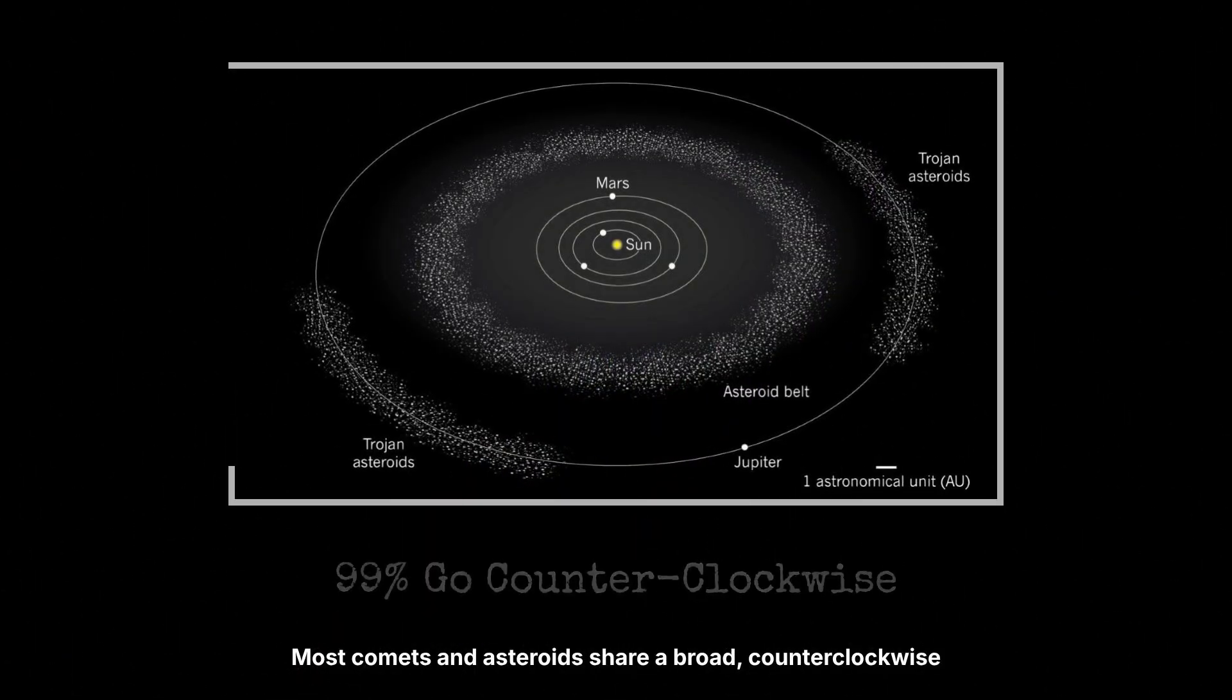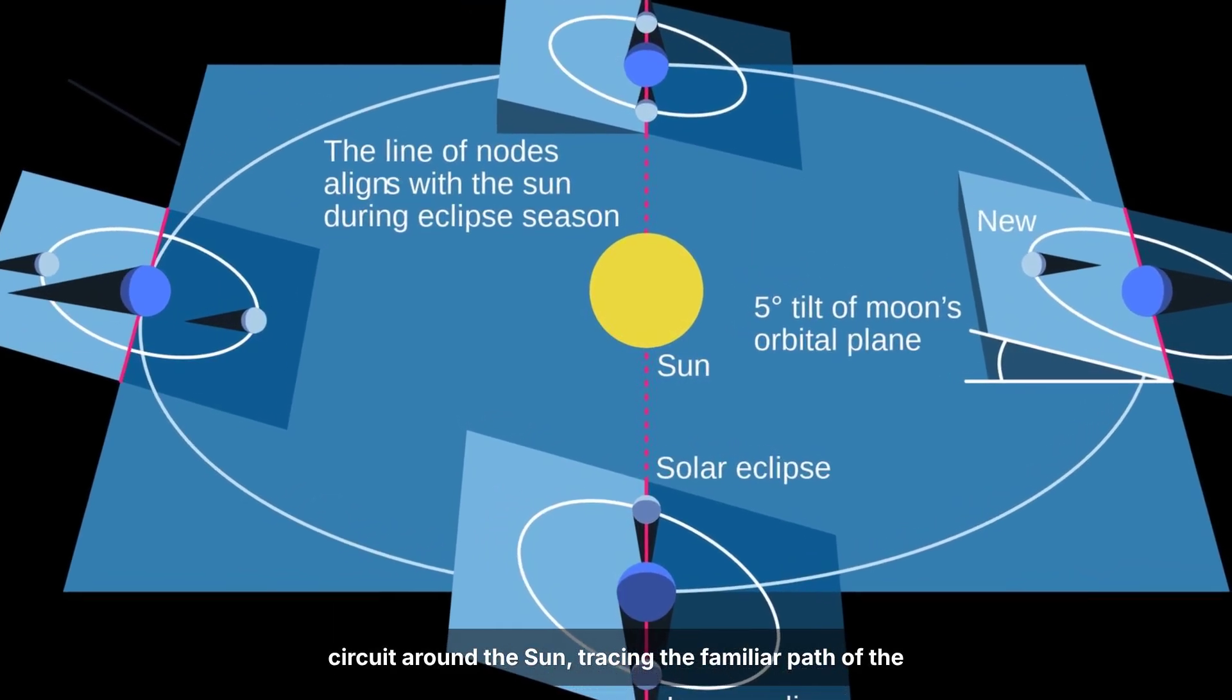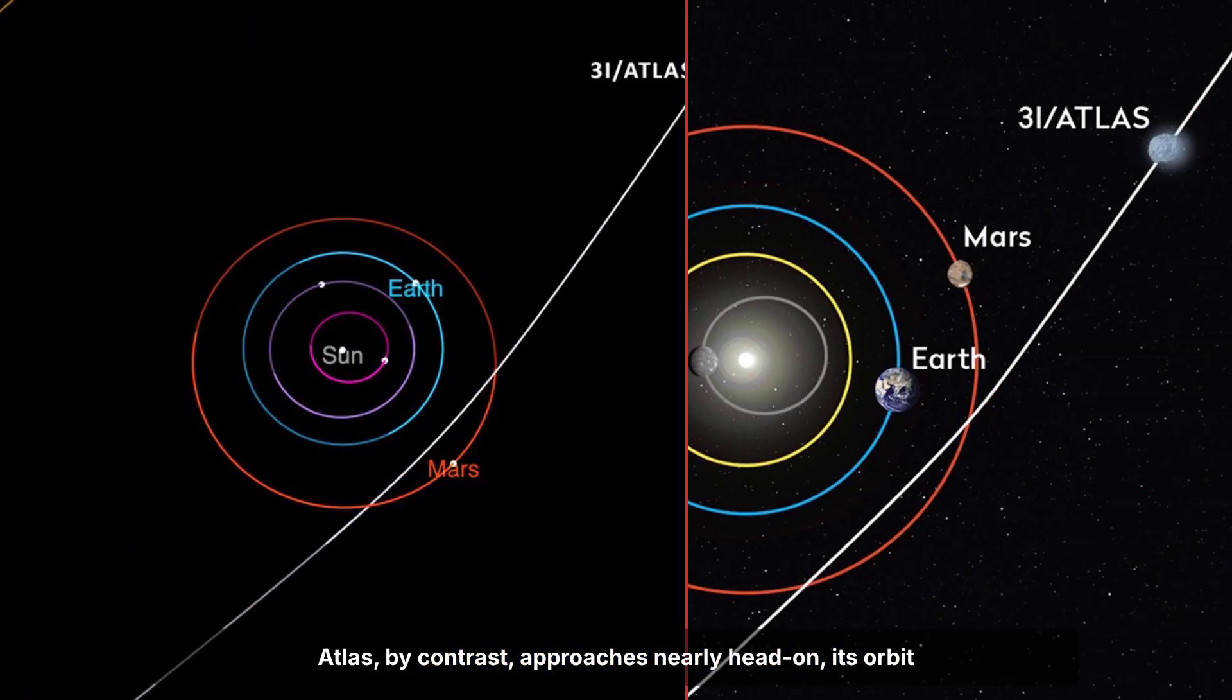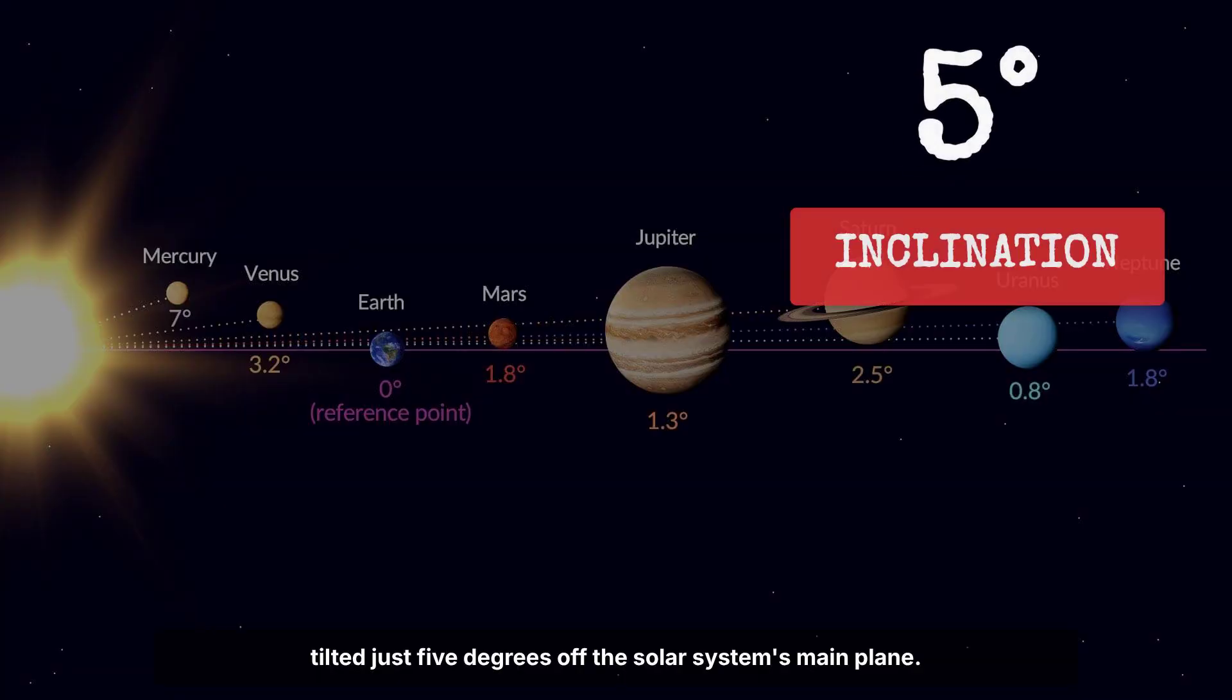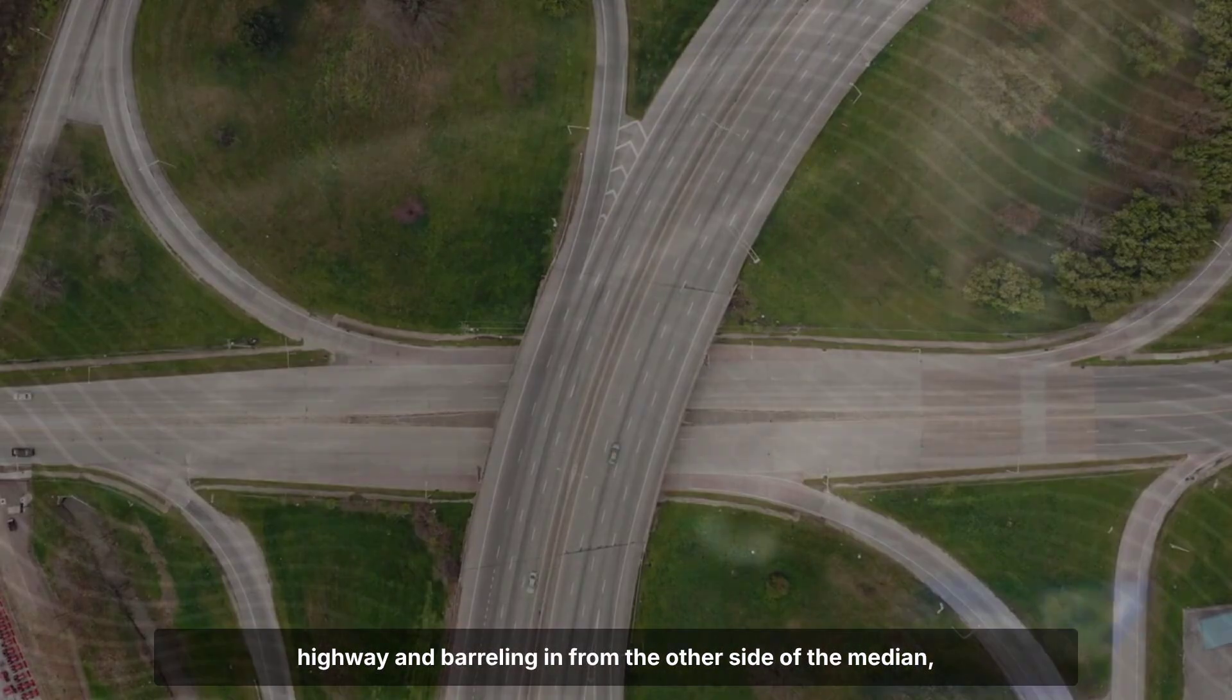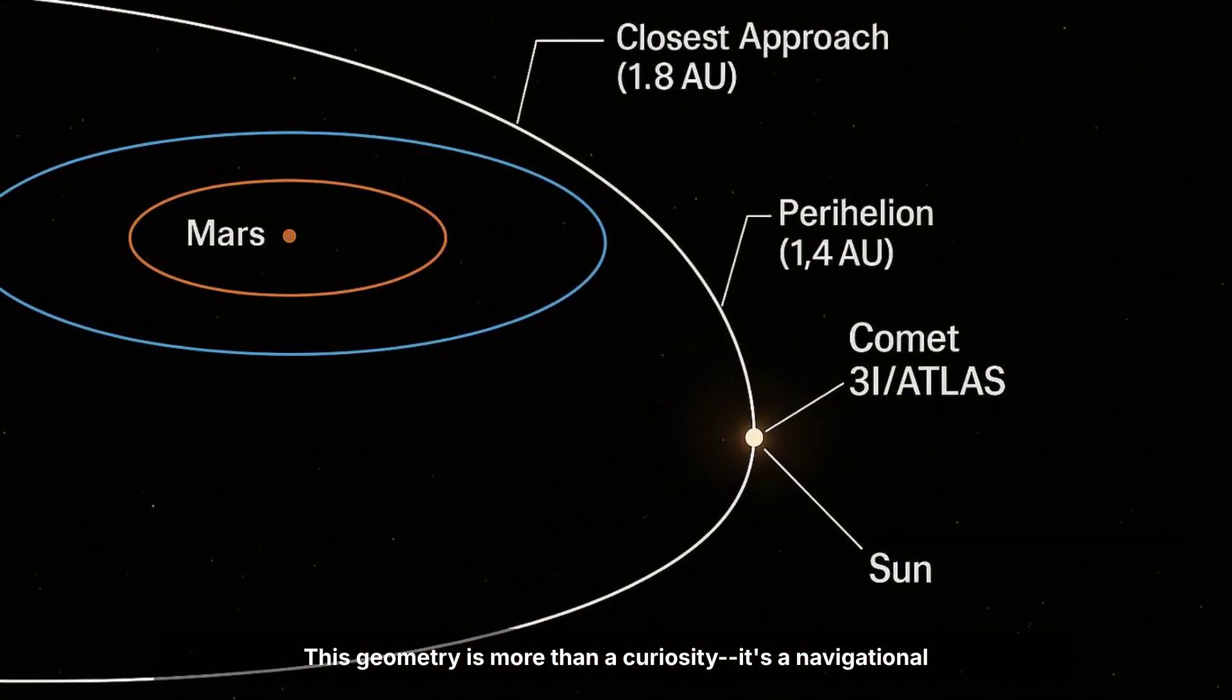Most comets and asteroids share a broad counterclockwise circuit around the sun, tracing the familiar path of the ecliptic. Atlas, by contrast, approaches nearly head-on, its orbit tilted just 5 degrees off the solar system's main plane. That's the difference between merging smoothly onto a highway and barreling in from the other side of the median, weaving through oncoming traffic.